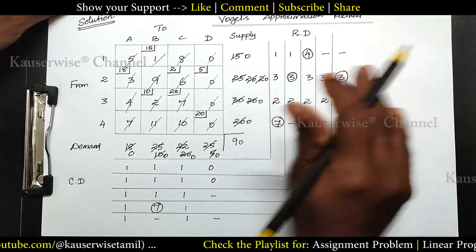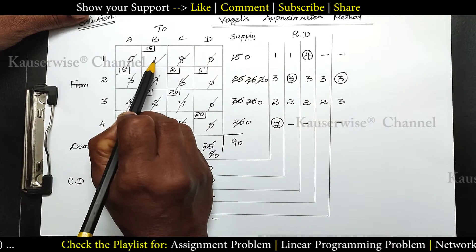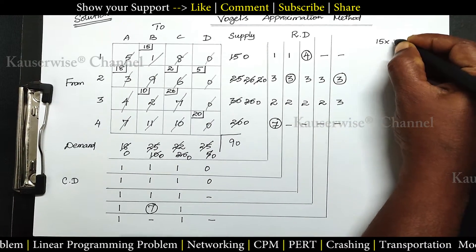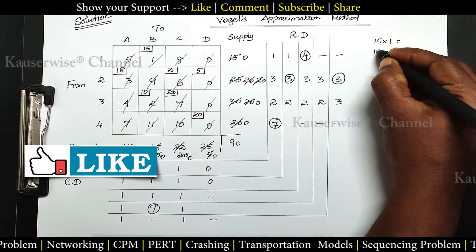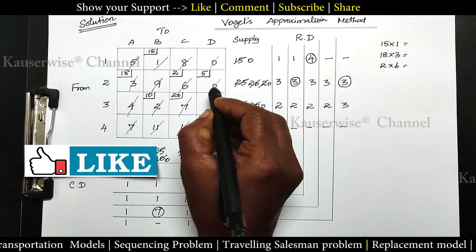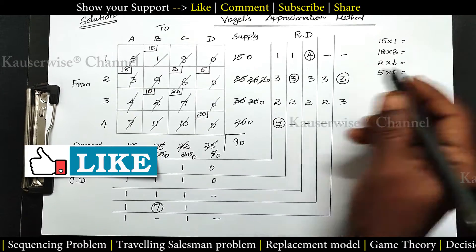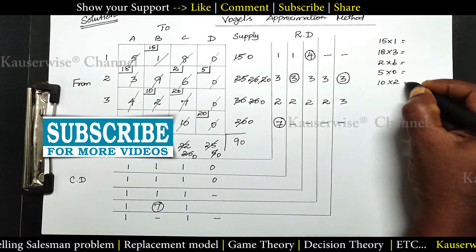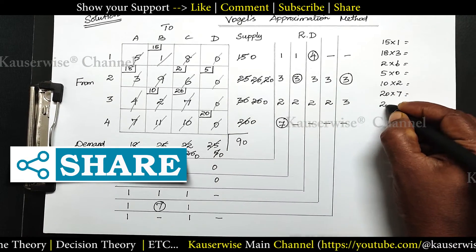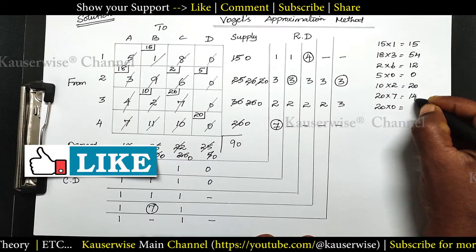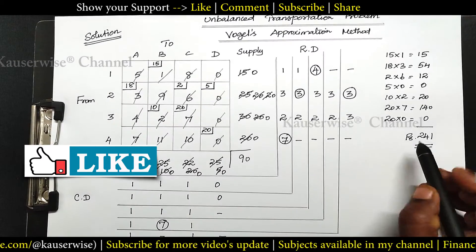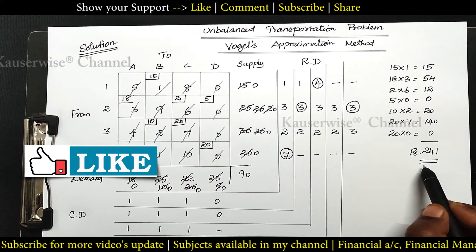Now you can find the total transportation cost by simply multiplying the cost with the allocated value. 15 × 1, plus 18 × 3, plus 2 × 6, plus 5 × 0, plus 10 × 2, plus 20 × 7, plus 20 × 0. The total comes to 241. This is the total transportation cost according to Vogel's Approximation Method. This is the way to solve an unbalanced transportation problem by using VAM method.